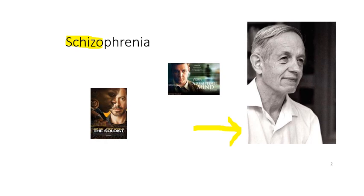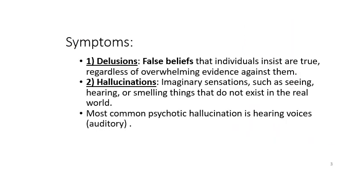I've also posted on Blackboard an interview with the original individuals that The Soloist is written about. Moving on — what are the symptoms of somebody that suffers with schizophrenia? About 1% of the general population suffers with schizophrenia, and the onset is usually late adolescence, around age 18, and early adulthood.